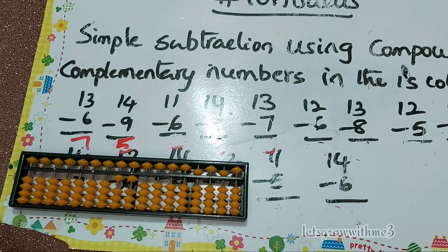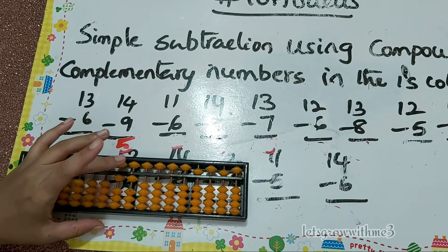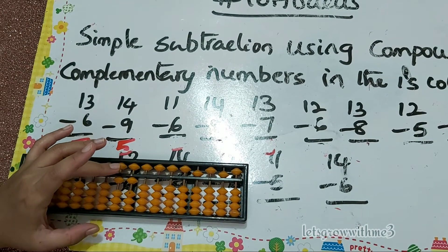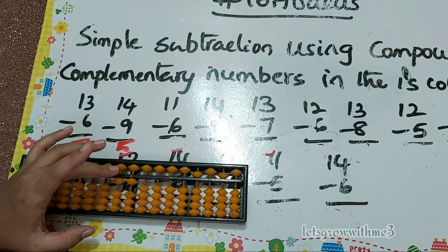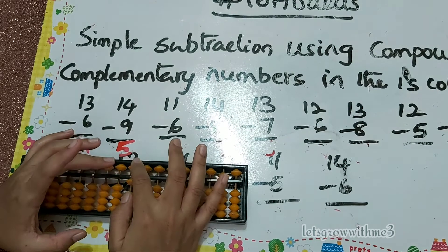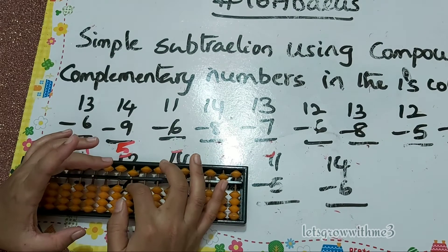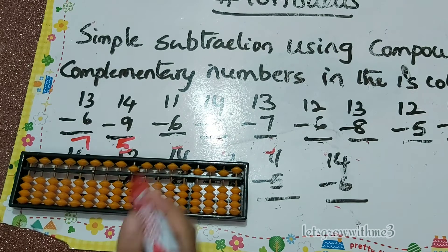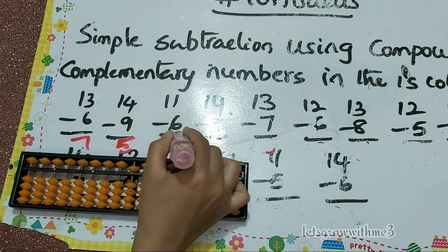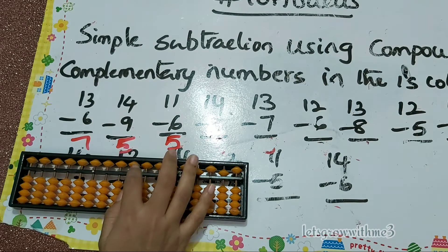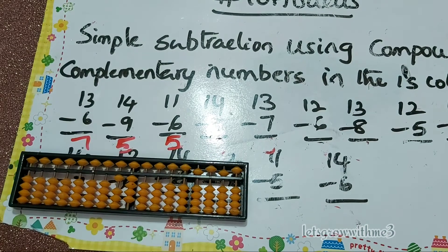Next: 11 minus 6. How to do minus 6? Papa down, mama down, babies down. We can't use big friend minus 10 plus 4, so we are using compound complementary method. The answer is 5.